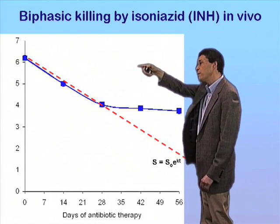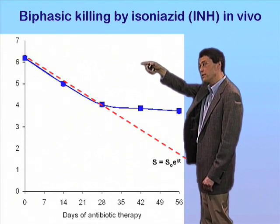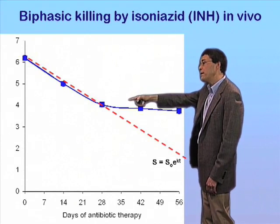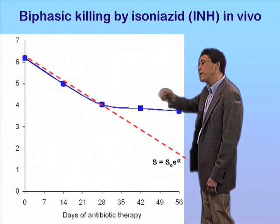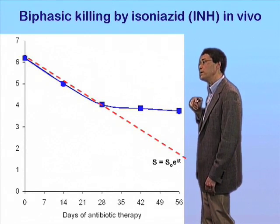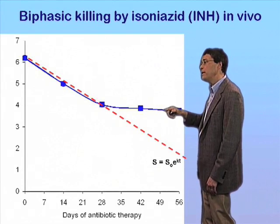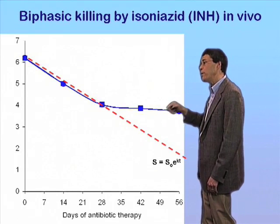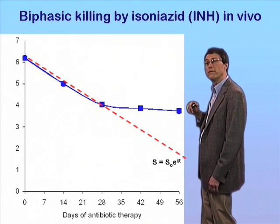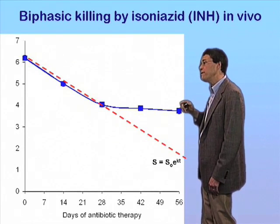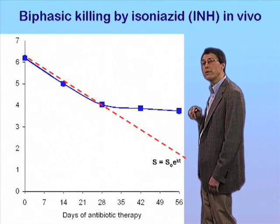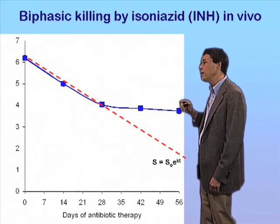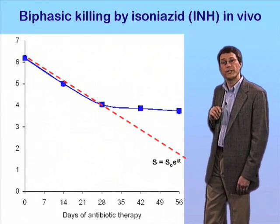It's actually very slow compared to the action of most antibiotics against most bacteria. But the remarkable thing is that after about four weeks of chemotherapy, the killing essentially stops, and the bacterial population stabilizes at a level about 0.1% to 1% of the initial population. There is a very high frequency of survivors in the face of chemotherapy. We call these the persisters.